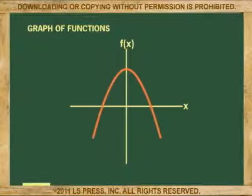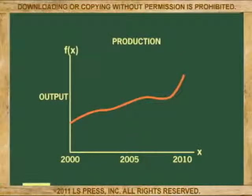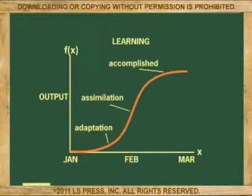Is the function negative, inverse, flat, going up, down? In other words, graphs of functions let us see how variation is taking place. This specific graph shows production over time and this one learning over time.